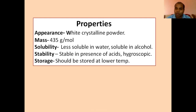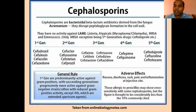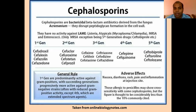Now we are going to enter the class of cephalosporins. The basic introduction is that they are also obtained from a fungus — that is Cephalosporium acremonium — from which cephalosporin was discovered. In terms of mechanism of action, they are similar to penicillin in that they inhibit the formation of the cell wall or peptidoglycan. They are generally ineffective against MRSA or enterococci.